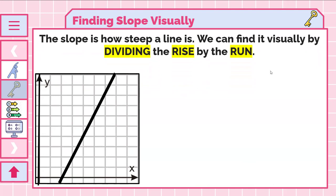We can first find it visually just like we did in the warm-up by dividing. We call it the rise by the run. Like in that warm-up, it really means how high it goes up and then how long it is.